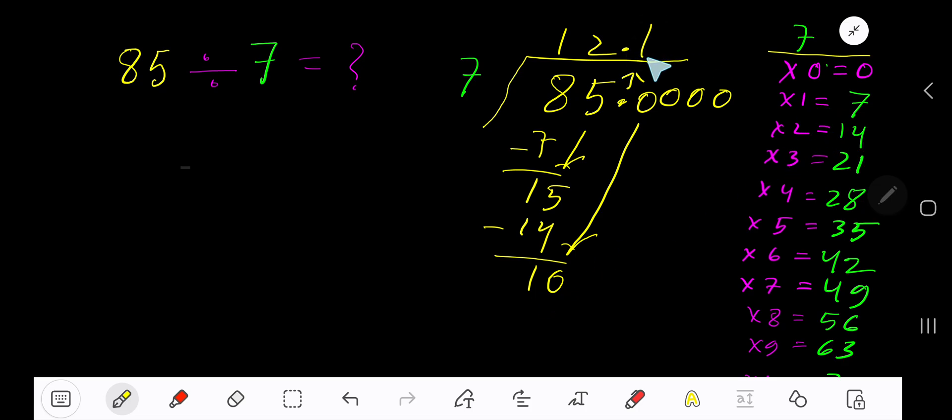2 times 7 is 14, which is greater, so 1 time. 1 times 7 is 7. Subtract to get 3. Bring down this 0. 7 goes into 30 how many times?